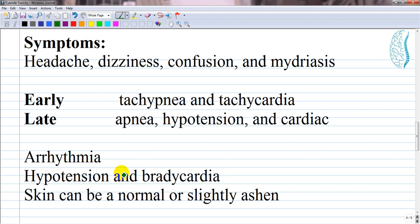The clinical manifestations can be divided into early and late categories. Some early central nervous system findings or signs are headache, dizziness, confusion and mydriasis. These are due to hypoxia and seizures and coma can develop as it progresses to an altered level of consciousness.